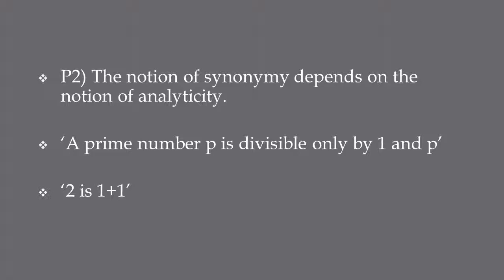I don't agree with Quine that the notion of synonymy rests on the notion of analyticity. For example, consider the statement 'a prime number p is divisible only by 1 and p.' I take this statement to be true in virtue of the meaning of 'prime number' — a prime number is a number divisible only by 1 and itself. I wouldn't say that 'prime' is synonymous with 'divisible only by 1 and itself' because the statement is necessarily true. Rather, the statement is necessarily true because 'prime' is synonymous with 'divisible only by 1 and itself.' Quine is redefining analyticity as necessary truth, but this claim is mistaken as we've seen with the term 'prime.'